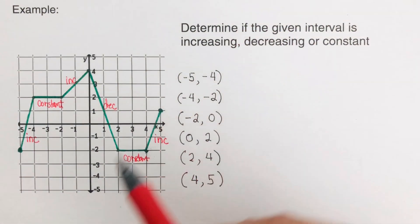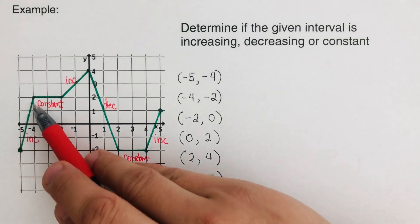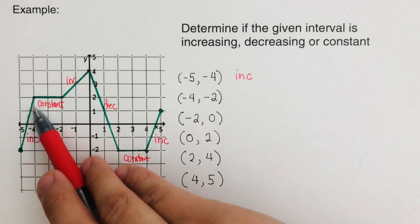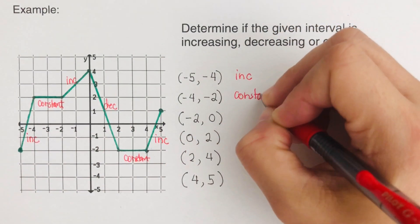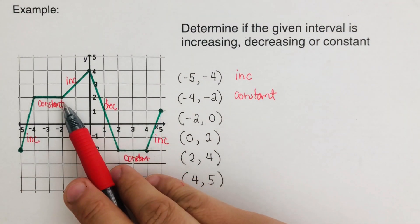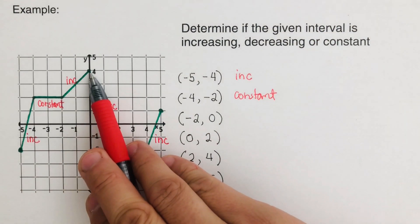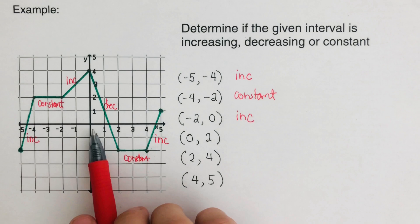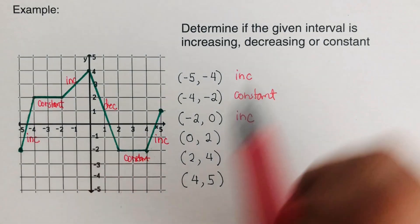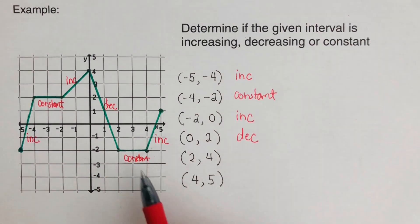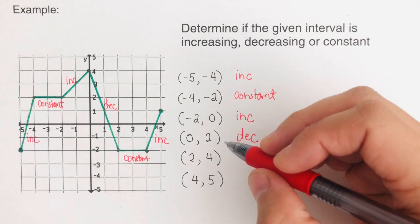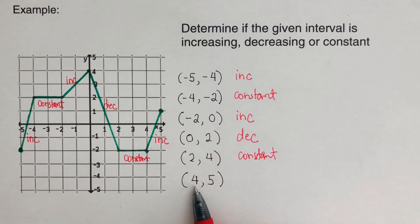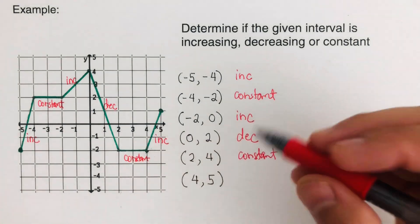Here are the labeled intervals: from negative five to negative four, that is increasing. From negative four to negative two is constant. From negative two to zero, that is increasing. From zero to positive two, it is decreasing. And from two to four, it is constant.